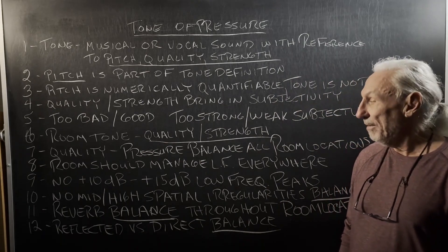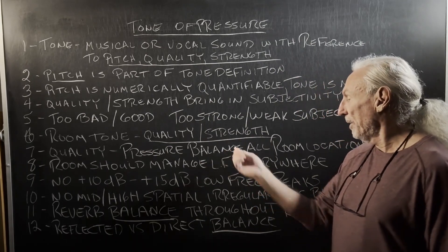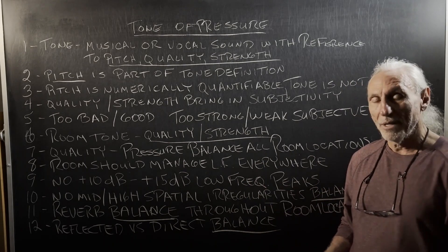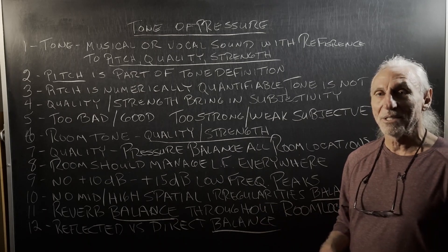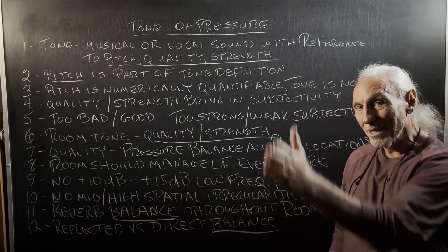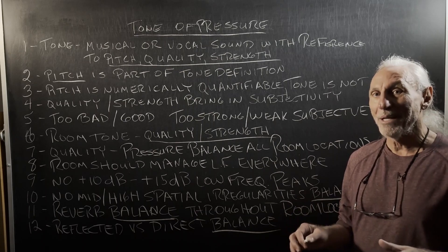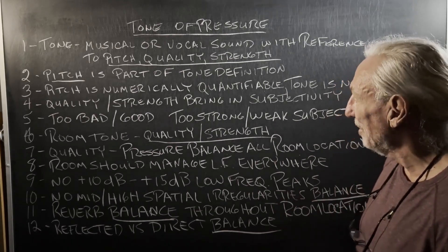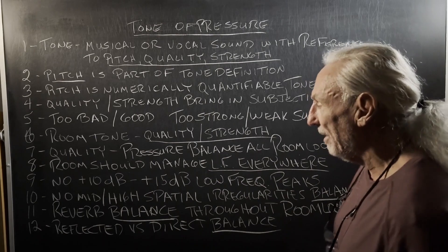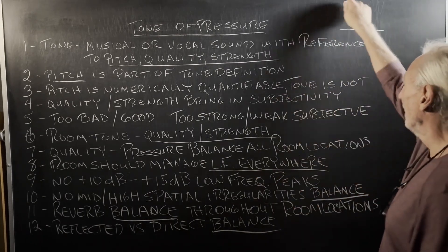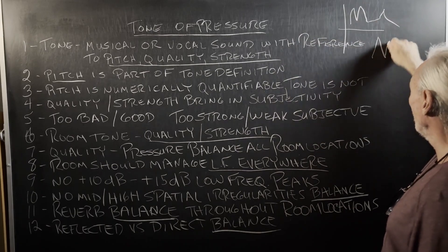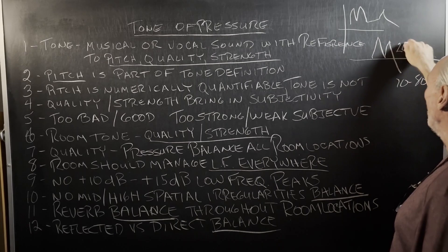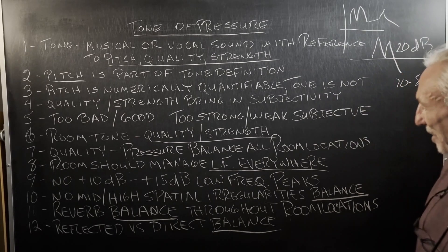You can deal with that — we have the treatment to do it. For quality, we have to pressure balance the room first in all locations. Low frequencies are a nightmare. They produce pressure pockets that are exaggerated or attenuated, and you can't have any of that inconsistency in a room, especially with energy oscillating through the room all the time. Rooms should manage low frequency everywhere — no 10 to 12 dB swings, none of that double camel hump we always see. Sometimes it drops way down around 70 to 80 Hz — you get two peaks and a big dip, almost 20 dB. You can't have those kind of spatial irregularities.